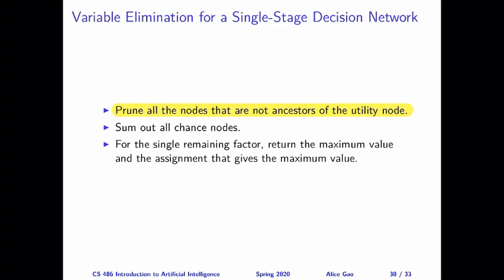Second, we will sum out all the chance nodes. These are sort of like the hidden variables in the variable elimination algorithm. We have to sum out all the random events that happen, sort of merge their effects together in order to determine how they affect our happiness, how they affect our utility.